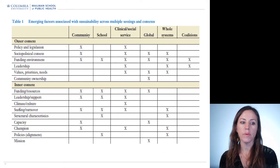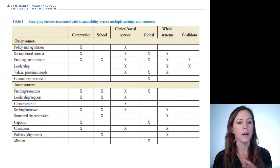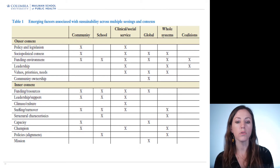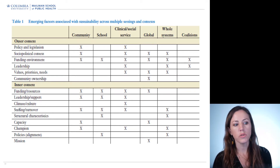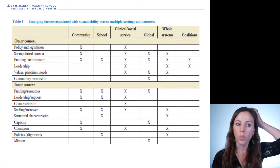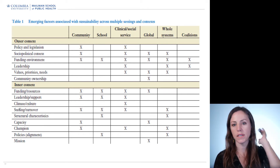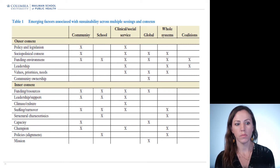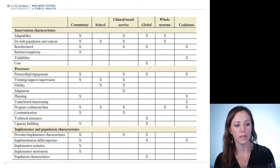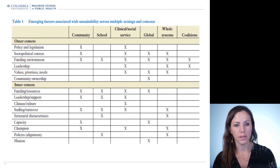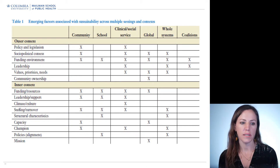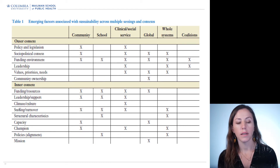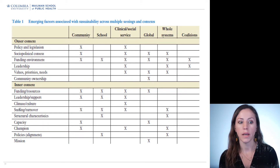We also went through all these different settings — community settings, school settings, clinical and social service settings, global settings, and whole systems and coalitions — and started to identify, using the language often found in the literature, what are the factors at various levels. Using tables with X's, we started to look at where the evidence is emerging that these factors matter — at the outer contextual level, the inner contextual level, the intervention characteristics, the processes, and the implementer and population characteristics. We also started to find that across different settings, certain factors might matter more for sustainability.